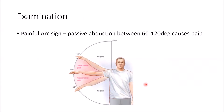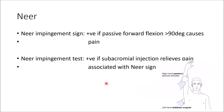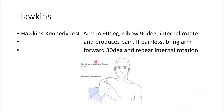Examination tests: the painful arc sign — during passive abduction from 60 to 120 degrees, pain is produced; before 60 and after 120 degrees there is no pain. The Neer impingement sign involves passive forward flexion beyond 90 degrees causing pain. The Neer impingement test is positive when, after injection of steroid and local anesthetic into the subacromial space, the previously positive sign becomes negative. The Hawkins-Kennedy test: with the arm abducted to 90 degrees and elbow at 90, internal rotation produces pain; if painless, bring the arm forward 30 degrees and repeat internal rotation.